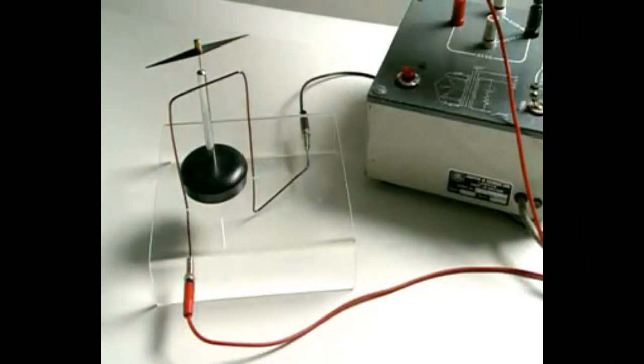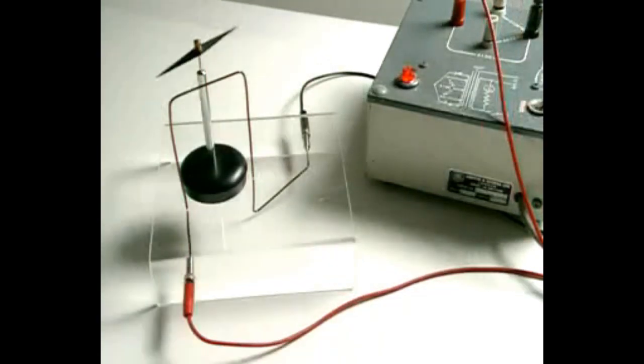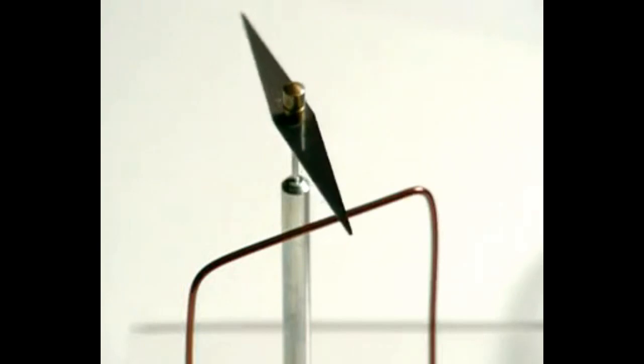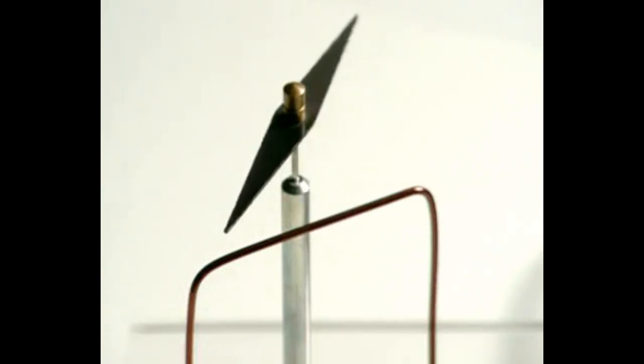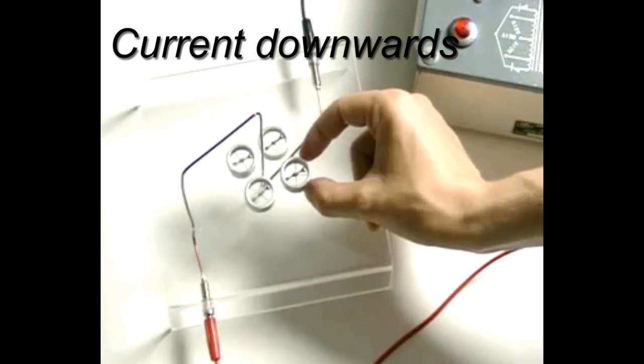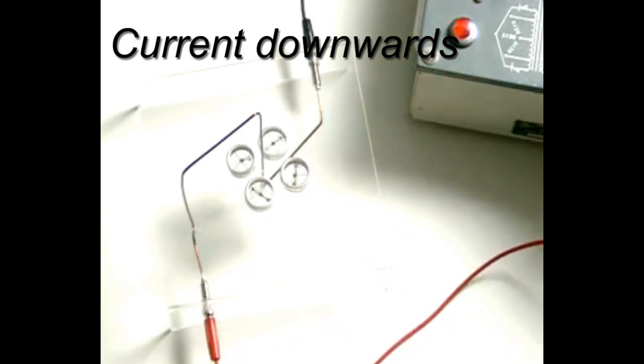When a current flows through this wire, the compass needle deflects to one side. An electric current produces a magnetic field. Plotting compasses show the circular field pattern around the wire.